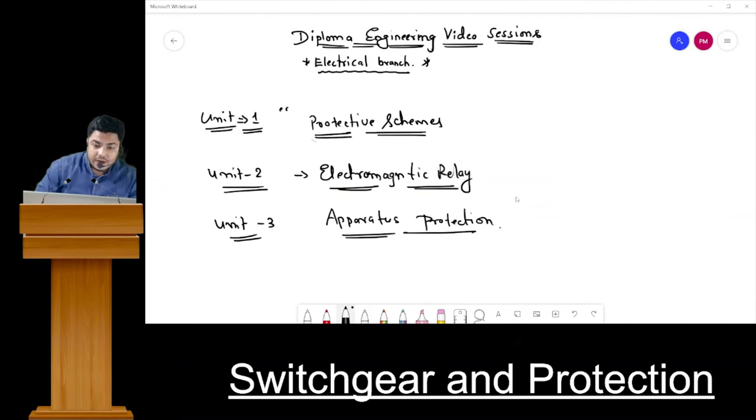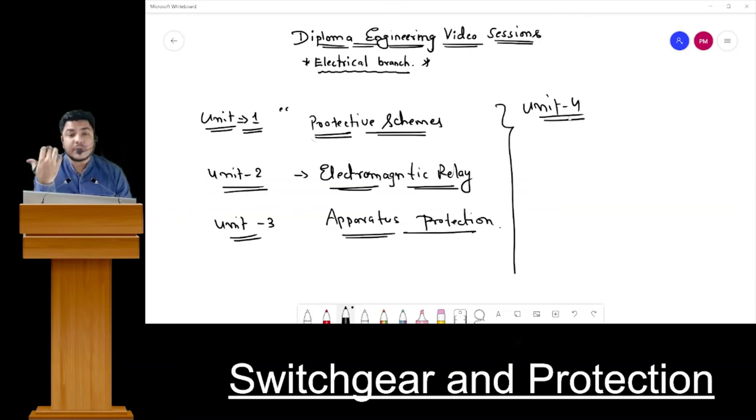After discussing these three units, the main unit will begin from Unit 4 and there we are going to study about static and numerical relays where we will be having calculations based on different equations. We will calculate fault current, actuating time of relay, and then we have current transformer and potential transformer - CT and PT. I think the abbreviations you must be aware of.